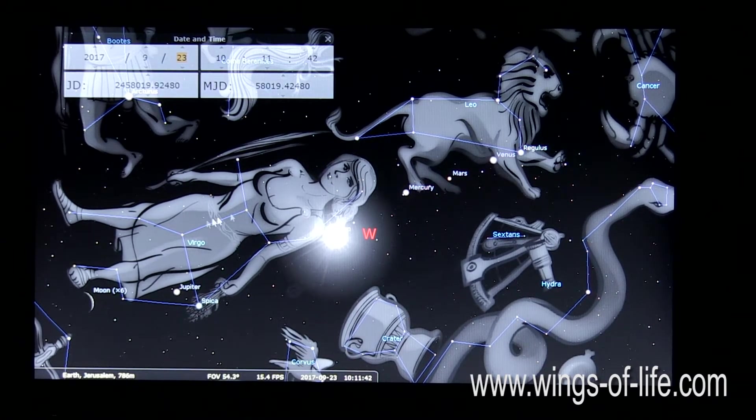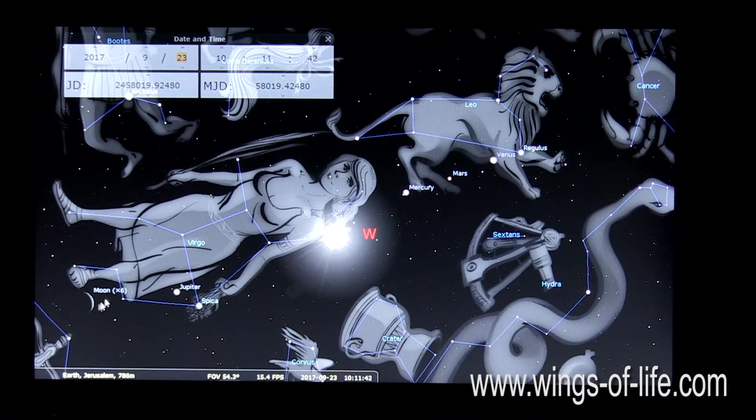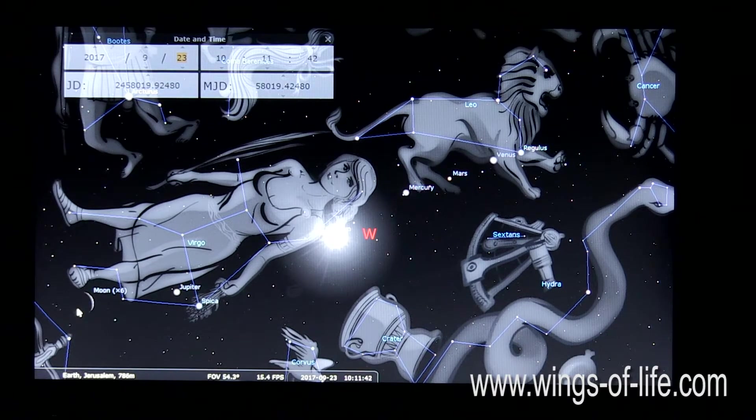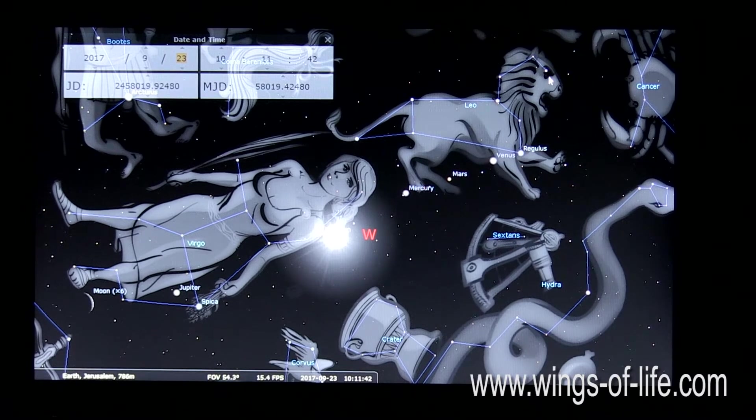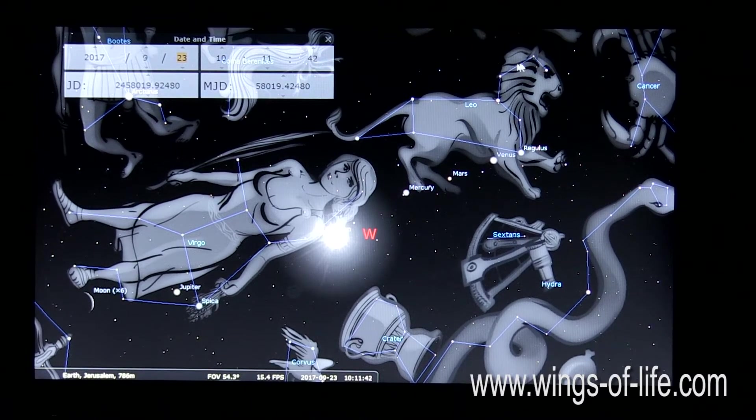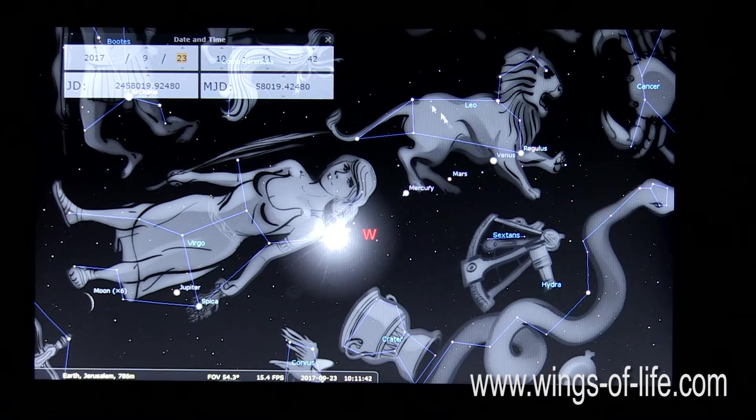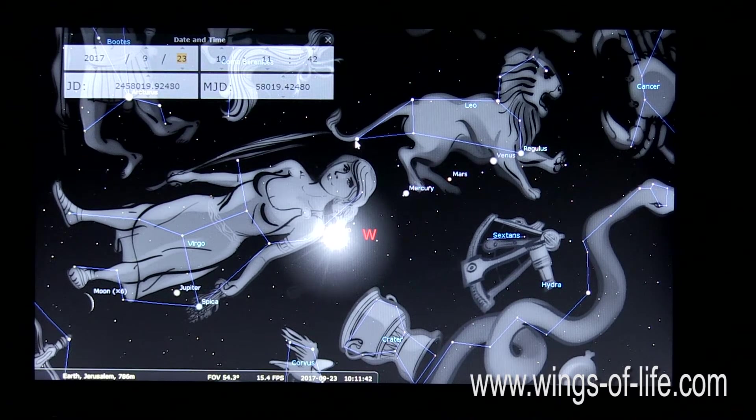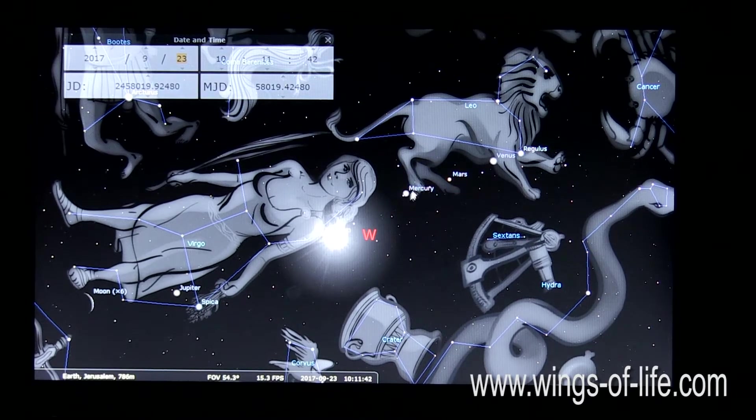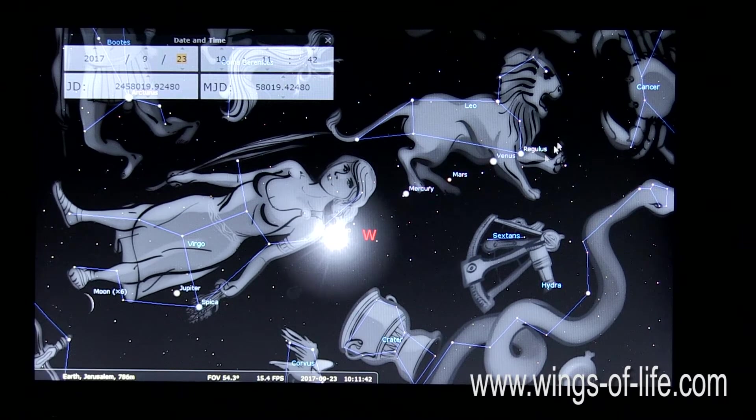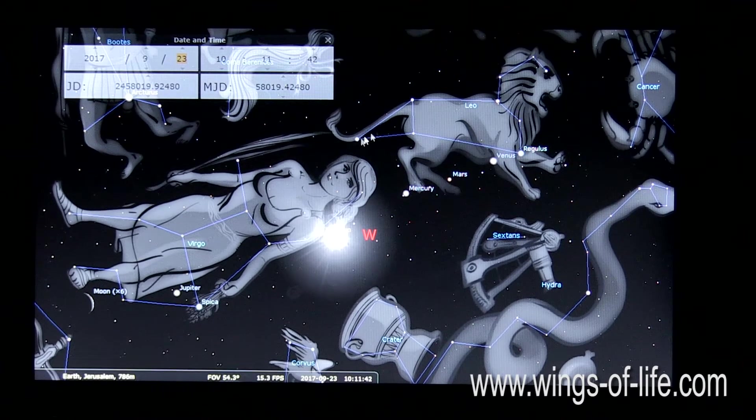She's clothed with the sun. And look at the moon right here. The moon is under her feet. And there's twelve stars above her head. Now Leo has nine main stars. One, two, three, four, five, six, seven, eight, nine. And here's three planets, Venus, Mars, and Mercury, above her head, making twelve stars above her head.